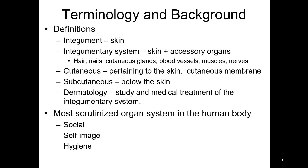First let's talk about the terminology of skin and a little bit of background information before we go into the structure of the skin. Another name for skin is the integument. When we talk about the integumentary system as a whole, we are talking about not just the skin but skin with its accessory structures, which are hair, nails, the skin glands including the sweat glands, oil glands, ear wax glands, the blood vessels which supply oxygenated blood and take away deoxygenated blood, as well as the muscles and nerves that are present in skin.